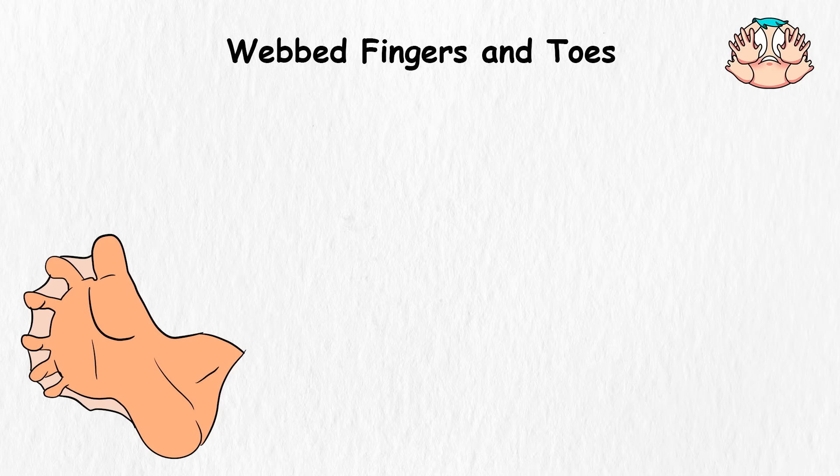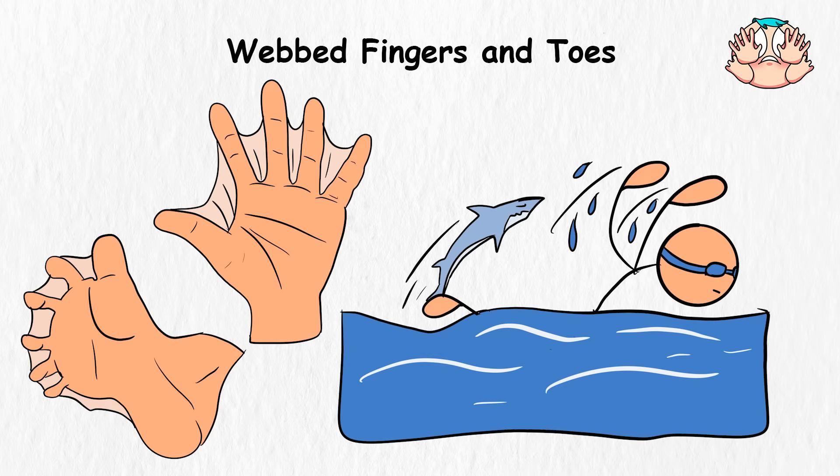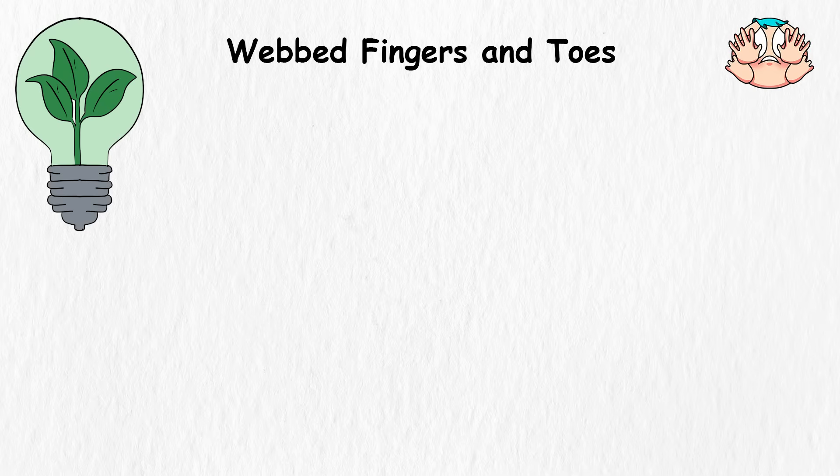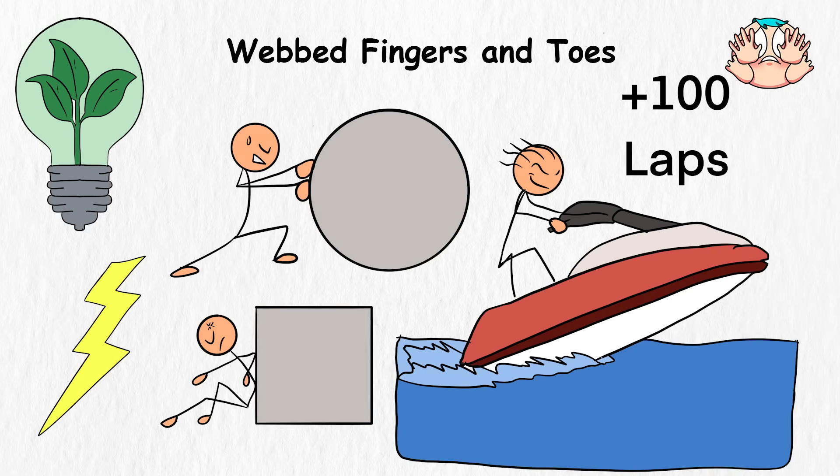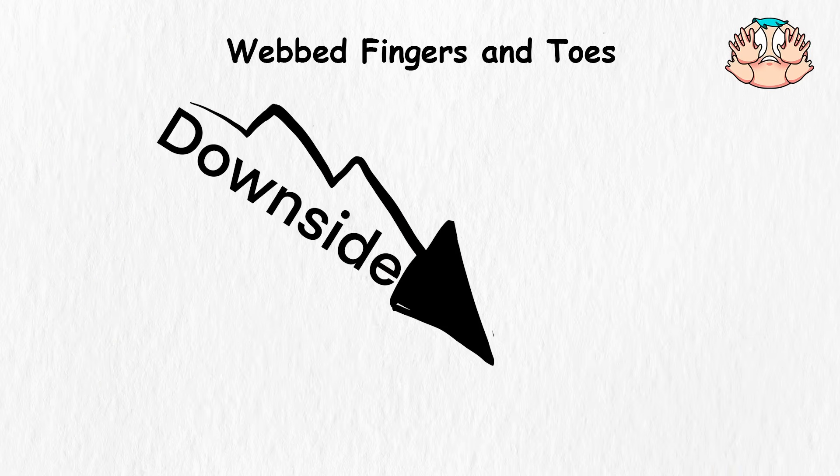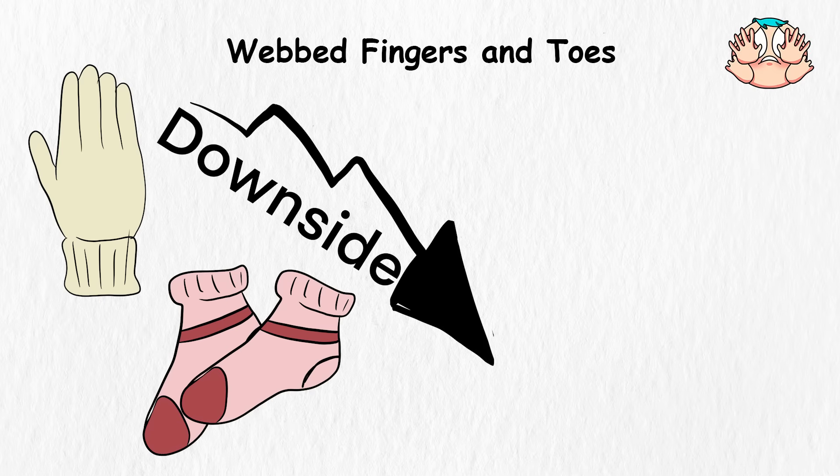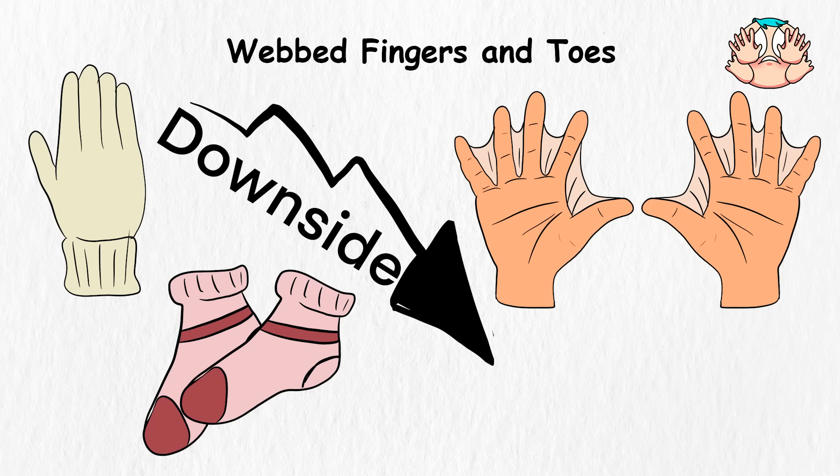Now, aside from the obvious fact that having webbed feet and hands means you'll literally be able to swim as fast as a fish, it would also provide you with energy conservation because webbing reduces the energy needed to move through water. You'll get more laps in with less effort. Work smarter, not harder. Sure, there might be a downside, like finding gloves and socks that fit, but who needs those when your fingers are aqua-adapted marvels? We'll just invent web-friendly fashion.